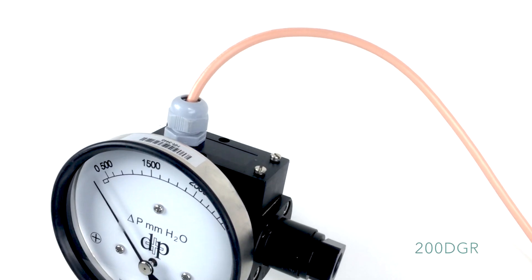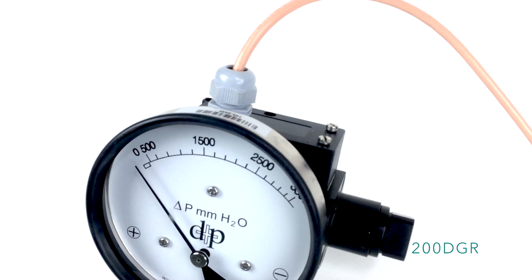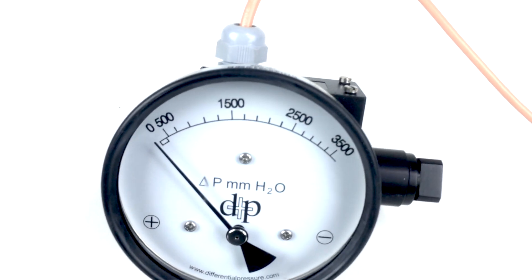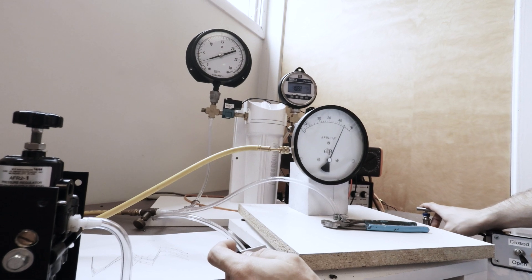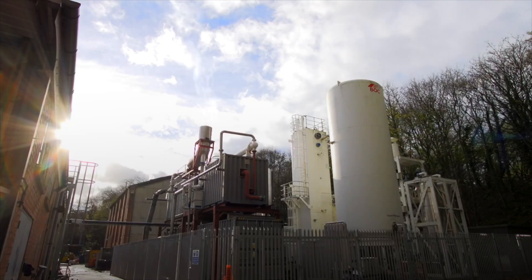Our 200 DGR is a diaphragm gauge that can separate the high and low pressure lines, has a 3000 psi max pressure, ranges from 3.5 to 100 psi, and it has the ability to measure liquid levels thanks to its diaphragm.